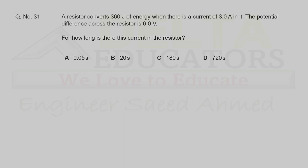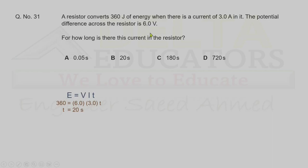Question 31. A resistor converts 360 J of energy with a current of 3 A and potential difference of 6 V. How long does the current flow? Using E = VIt: 360 = 6 × 3 × t, giving t = 20 seconds. Correct option is B.